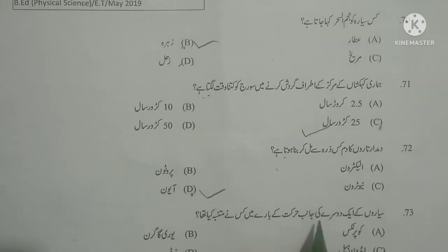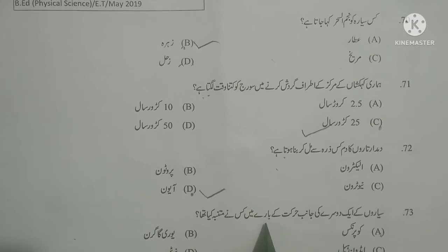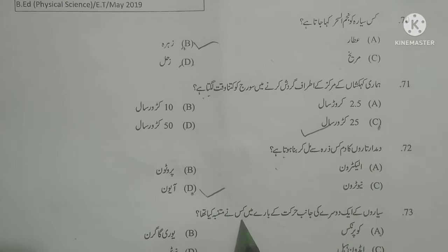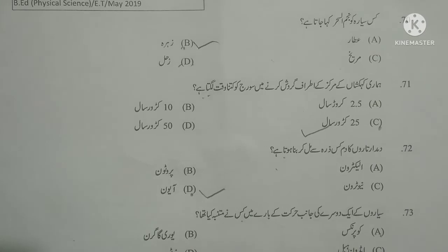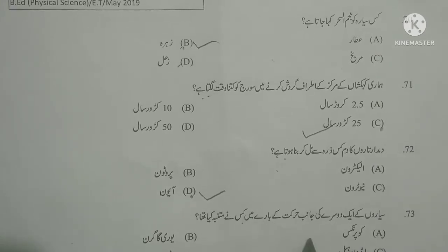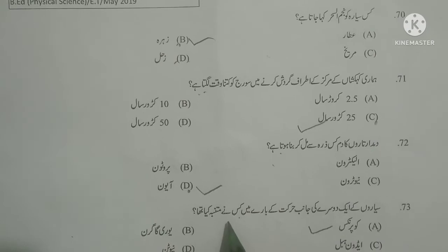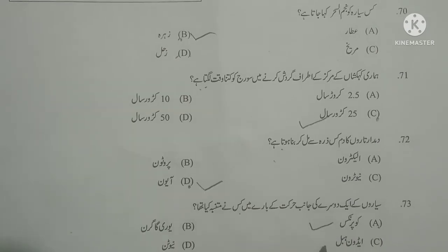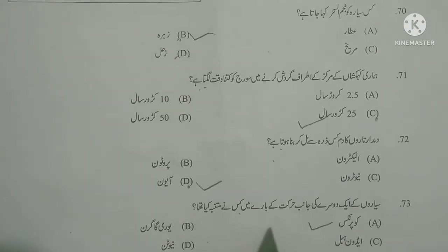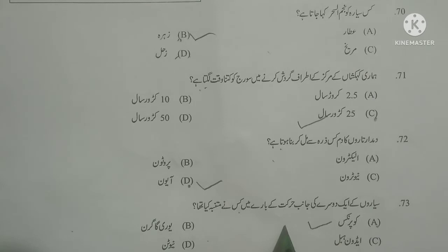Next question: Saiyaro ka ek doosre ki janib harakat ke baare mein kisne mutnaba kiya tha? Who observed the movement of planets towards each other? As you know, Copernicus observed the movement of planets towards each other. Options given: Copernicus, Yuri Gagarin, Edwin Hubble, Newton — option A, Copernicus, is correct.